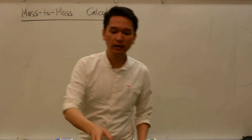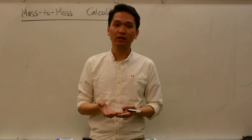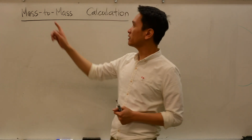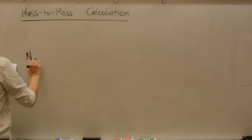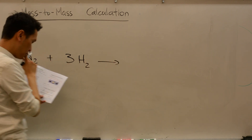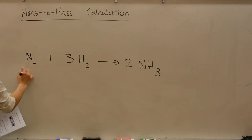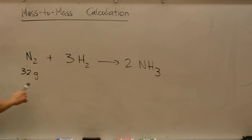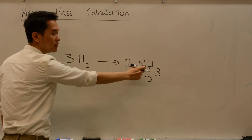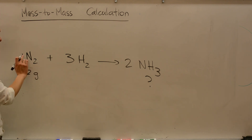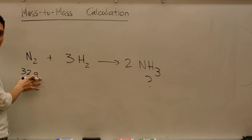Mole-to-mole calculations are great, but often they're not very useful in the laboratory. Even if we know how many moles we need, we can't really measure moles — what we can measure is mass. So we often need to calculate mass-to-mass conversion. For example, with nitrogen reacting with hydrogen to give ammonia, if I have 32 grams of nitrogen, how many grams of ammonia will I make? The chemical equation doesn't mean for every 1 gram of nitrogen I get 2 grams of ammonia. The ratio is moles to moles. So if I start out with grams, I first have to convert to moles.